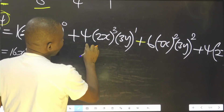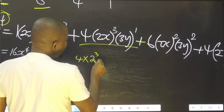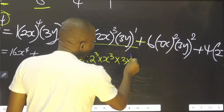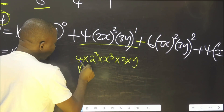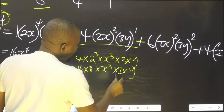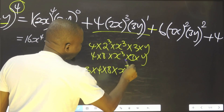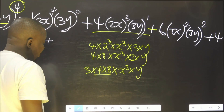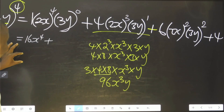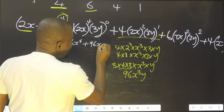Then let's work on this particular one. It simply means 4 multiplied by 2 raised to the power 3, multiplied by x raised to the power 3, multiplied by 3 raised to the power 1 - everything will still remain the same. This means 4 multiplied by 8 multiplied by x³ multiplied by 3 multiplied by y. Bringing the 3 across: 3 × 4 × 8 × x³ × y = 96x³y. So we put 96x³y.